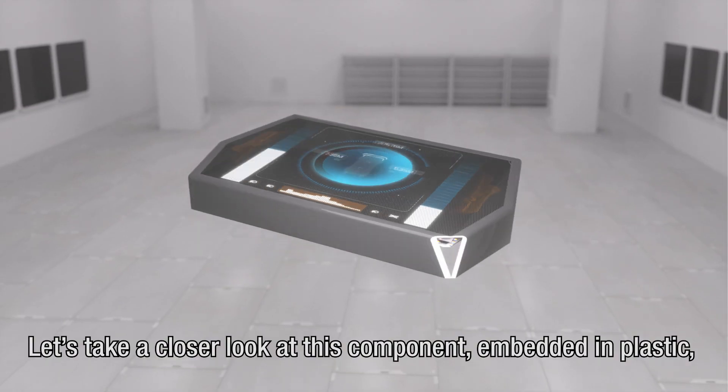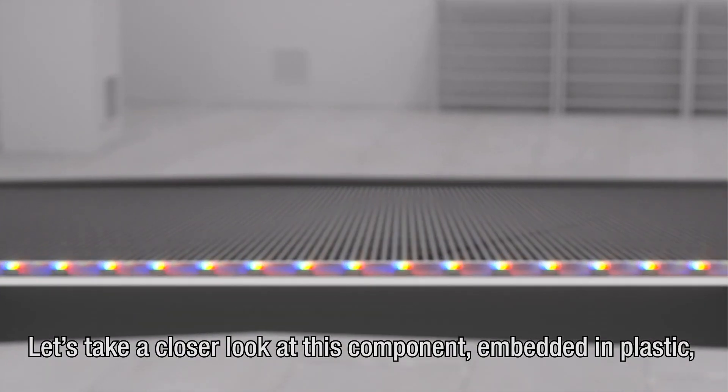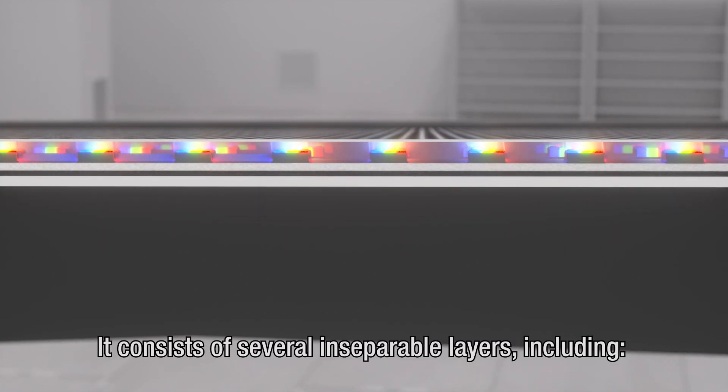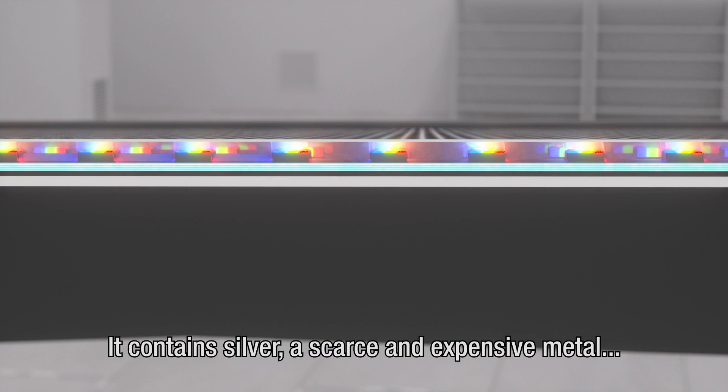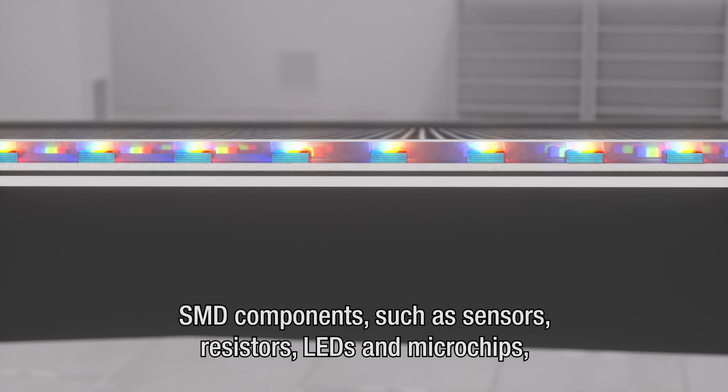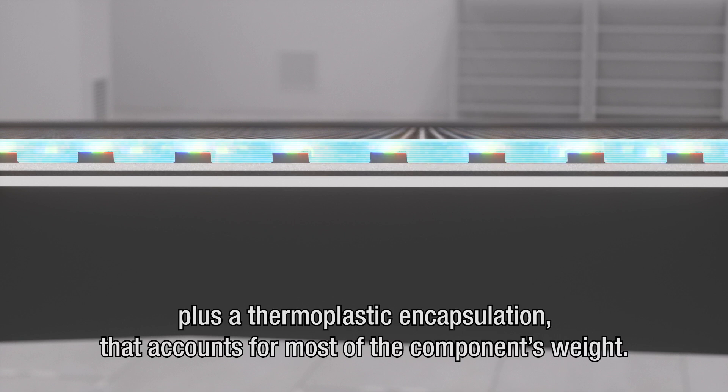Let's take a closer look at this component embedded in plastic. It consists of several inseparable layers, including the plastic substrate with the printed circuitry. It contains silver, a scarce and expensive metal, SMD components such as sensors, resistors, LEDs and microchips, plus a thermoplastic encapsulation that accounts for most of the component's weight.